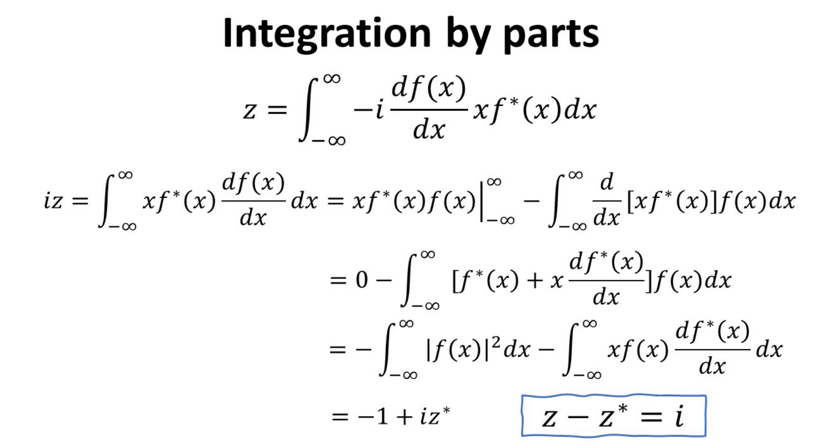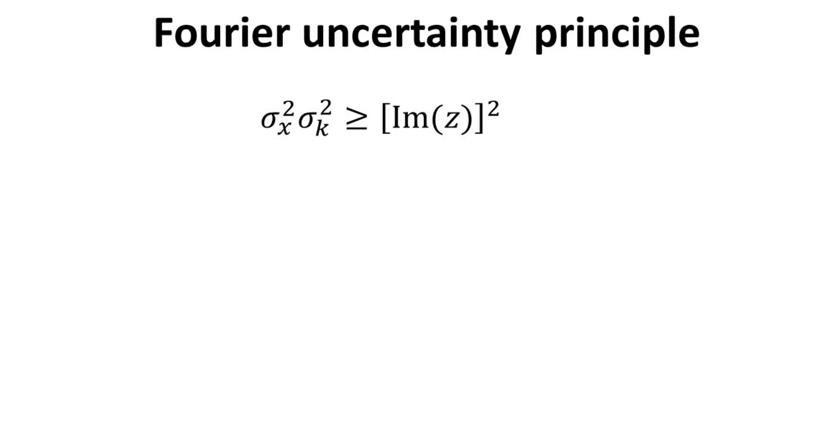With some math using integration by parts, one can further establish a simple relation for z minus z conjugate as shown in the blue box. Feel free to pause here if you would like to go over the math. Using this identity, it allows us to arrive at a simpler form of the Fourier uncertainty principle. By first inserting the relation we derived from integration by parts, we obtain that the general result that the product of the variance of x with variance of k must always be larger than or equal to 1 over 4.